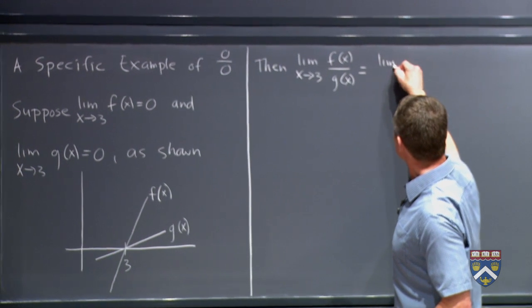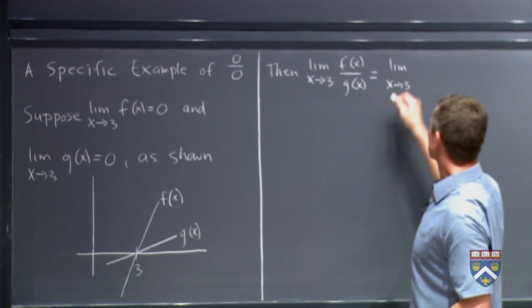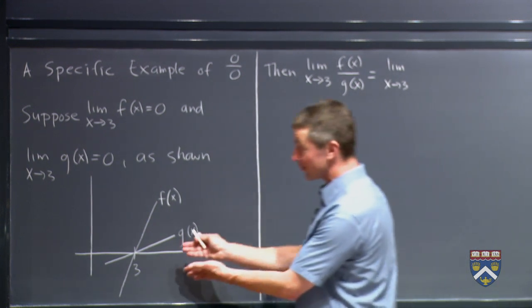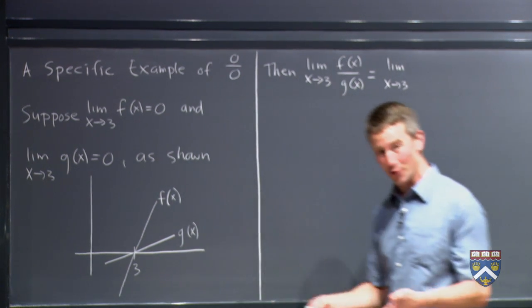This is where we're going to use what we did earlier this week, which was not the implicit differentiation but the local linearization. So when I'm getting very near 3, when x is approaching 3, that's as local as you're going to get.